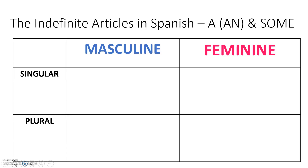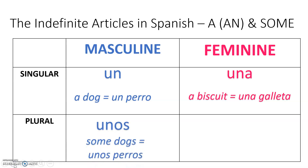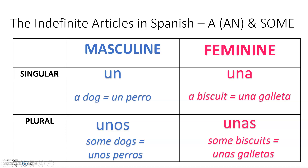So let's take a look at the indefinite articles in Spanish — the words for 'a,' 'an,' or 'some.' If the noun is masculine and singular, we use 'un.' For example, 'a dog' — 'un perro.' If the noun is feminine and singular, we use 'una.' For example, 'a biscuit' — 'una galleta.' For plural nouns — the words for 'some' — if masculine plural, we use 'unos.' For example, 'some dogs' — 'unos perros.' And if feminine plural, we use 'unas.' For example, 'some biscuits' — 'unas galletas.' Un, una, unos, unas — meaning 'a,' 'an,' or 'some.'